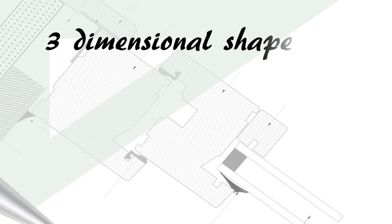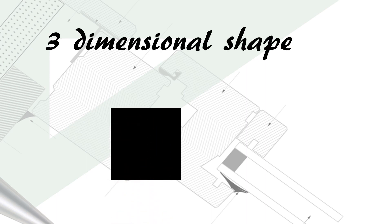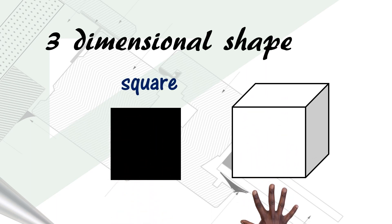The first shape we'll look at is this. Now in two-dimensional, this would be a square. In three dimensions, this is a cube. And if something has a cube shape, we say it is cubic.